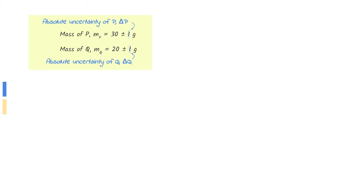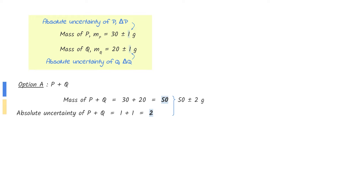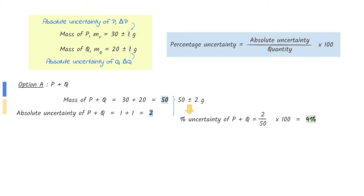In addition and subtraction, we need to first find the absolute uncertainty before finding the percentage uncertainty. Let's go through one option at a time. The mass of p plus q is 50. The absolute uncertainty of p plus q is 2, since p and q each have an absolute uncertainty of 1. The percentage uncertainty can be found by dividing the absolute uncertainty with its quantity multiplied by 100. The percentage uncertainty of p plus q will be 2 over 50 multiplied by 100, which gives us 4 percent.